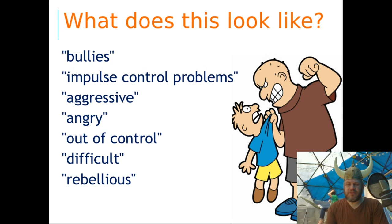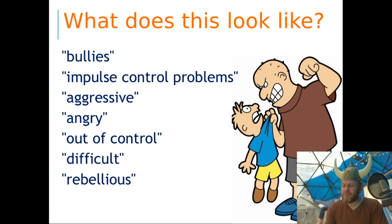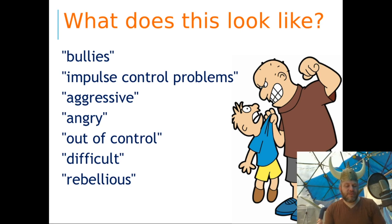What do these conduct disorders — including oppositional defiant disorder and conduct disorder itself — what do they look like? Well, these are things that in the past were just called bullying behaviors or impulse control problems. Kids are often described as being aggressive, angry, out of control. Oppositional defiant disorder especially tends to get described as rebelliousness — which is kind of cool these days. We have James Dean to thank for that sort of thing.